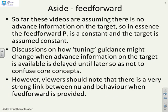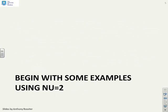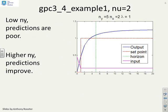And aside, we're not dealing with feedforward. We're assuming that any feedforward compensator is a constant, because there are some interactions between the feedforward and the tuning and the horizons, and therefore it's best to look at that separately. Some examples then with nu equals 2.